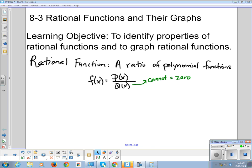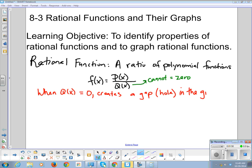So when our denominator equals zero, it creates a gap, or sometimes we'll call it a hole, or it could create a vertical asymptote. So the place where your denominator is equal to zero could either make a gap or it could create a vertical asymptote.